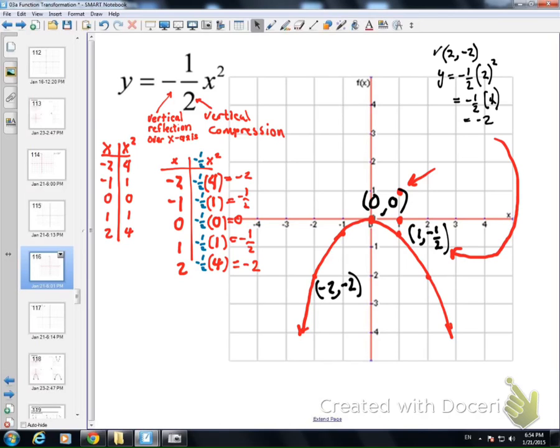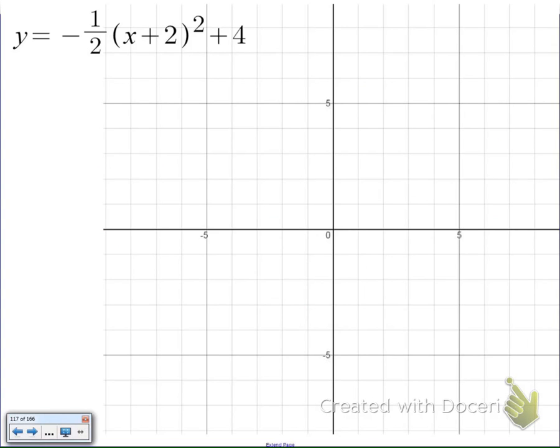Well, it looks like I'm pointing at (1, negative 1 half), but I'm pointing at (2, negative 2), which is, again, a point on my graph.